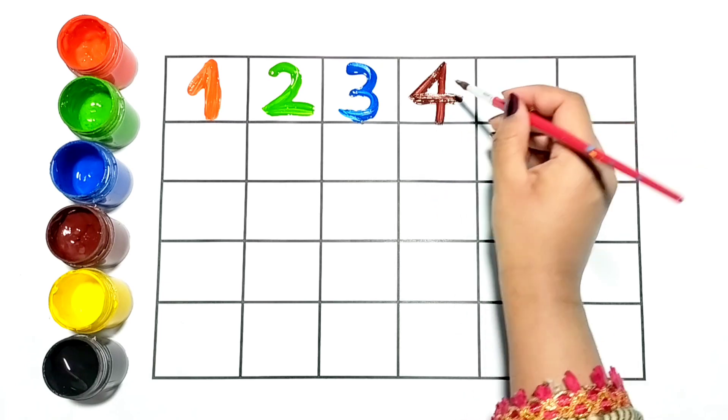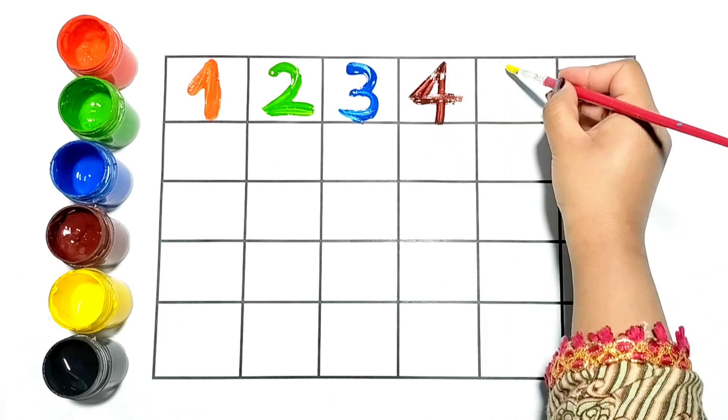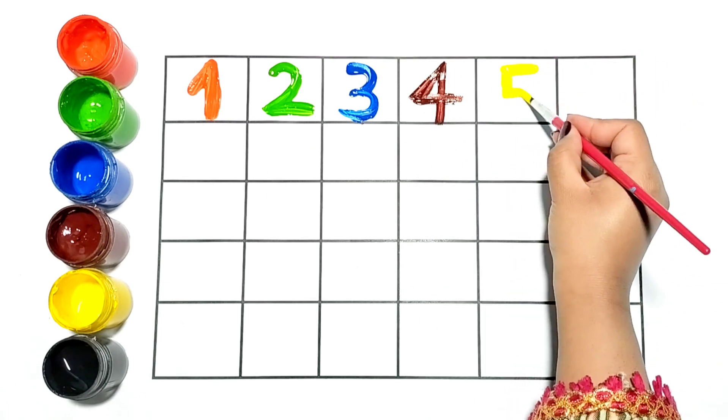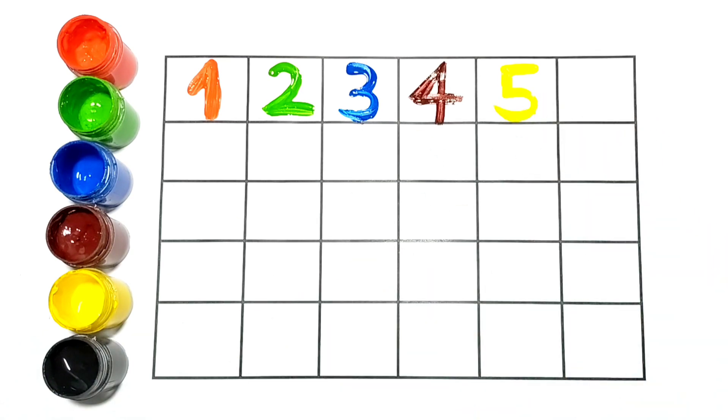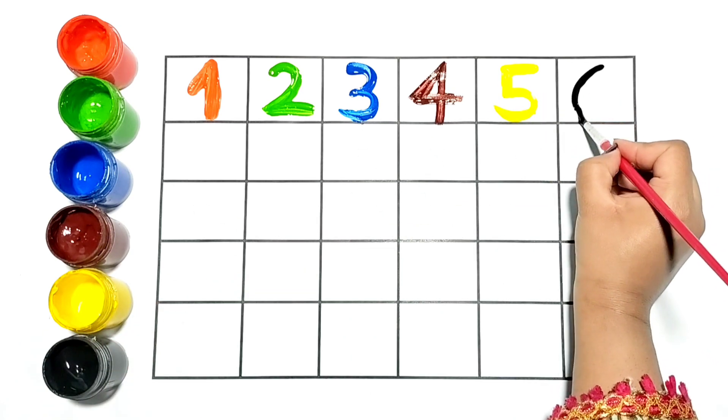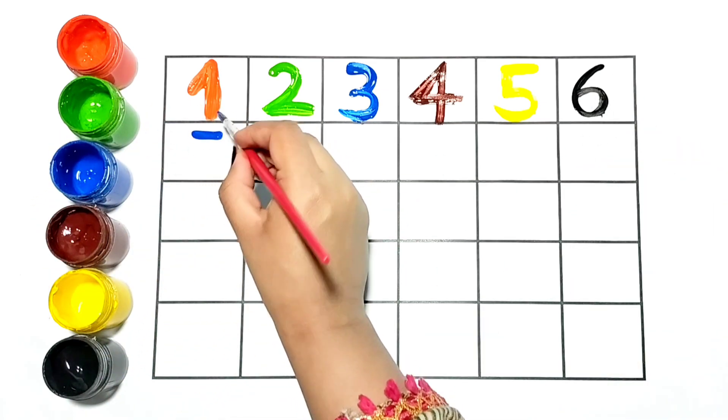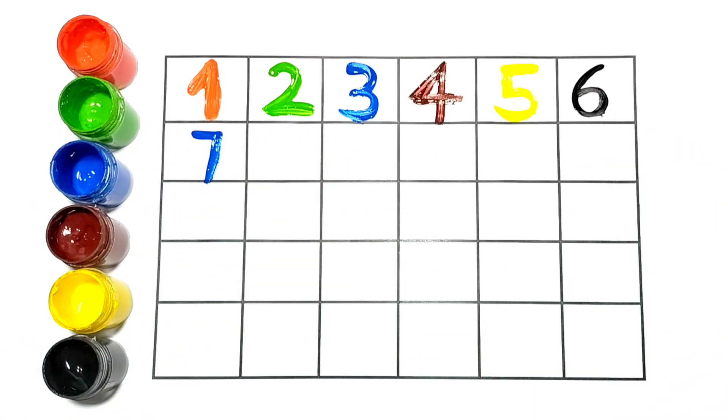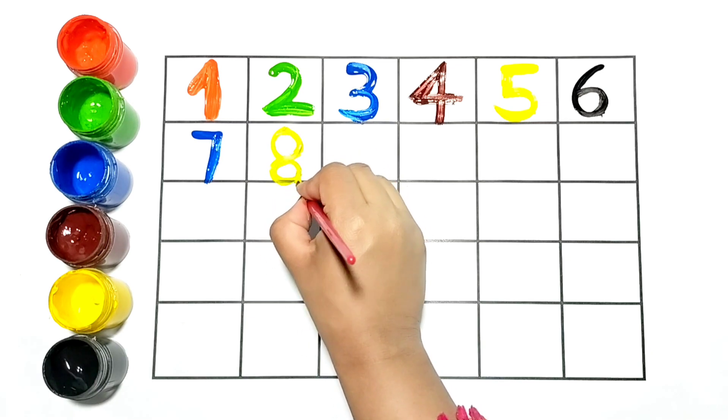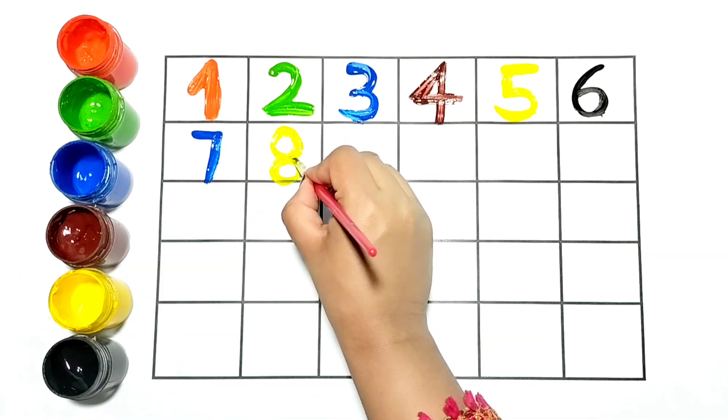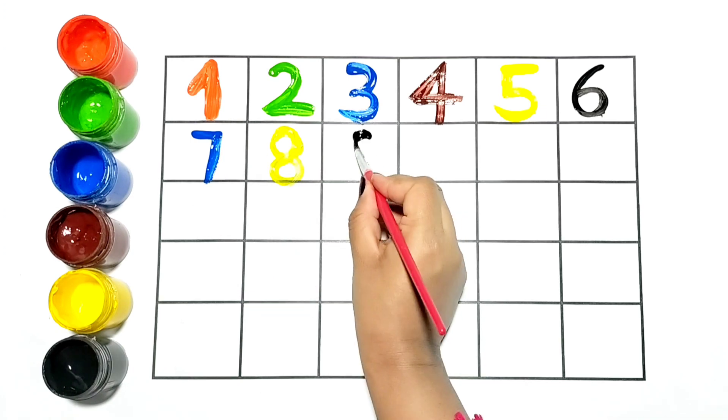Number 5, yellow color. Now let's write 6 with black color. This is number 7. Let's write number 8, yellow color. Let's write 9.